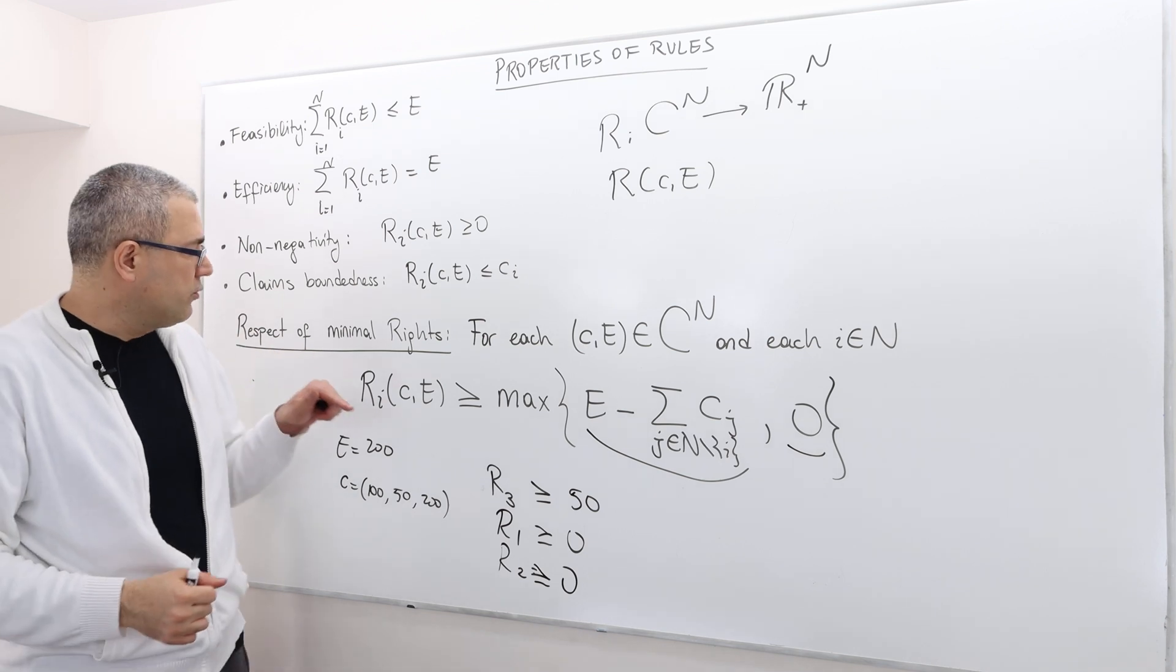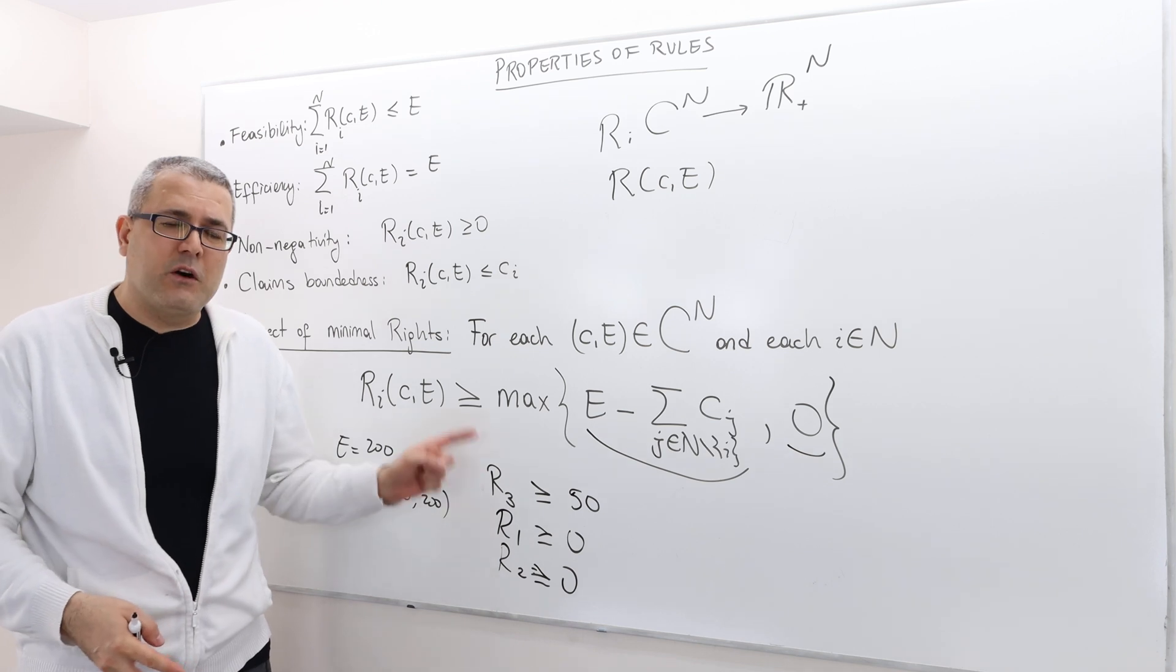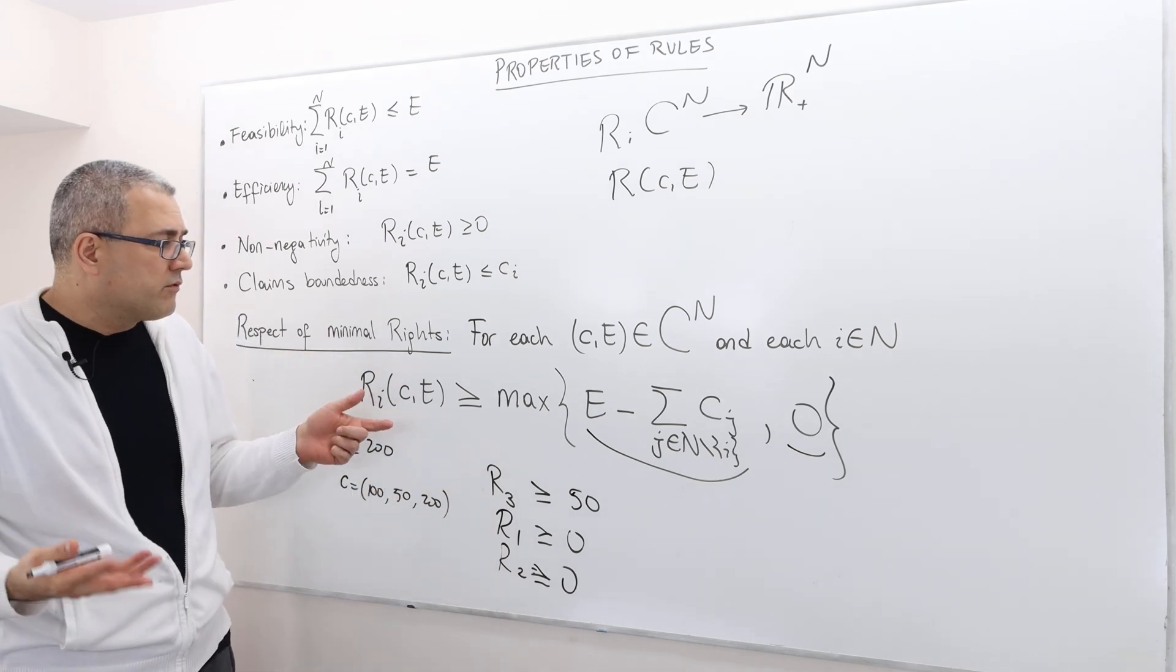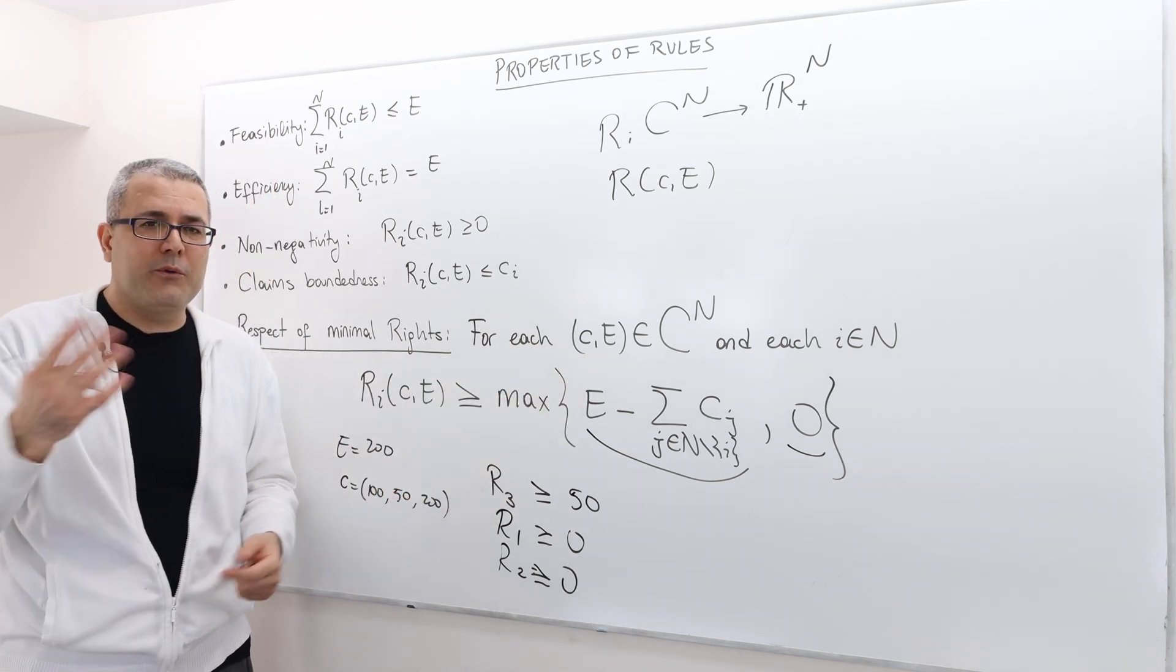So if a rule satisfies respect of minimal rights, for this specific problem, it has to obey these. But obviously, respect of minimal rights says for any claims problem, this has to hold.